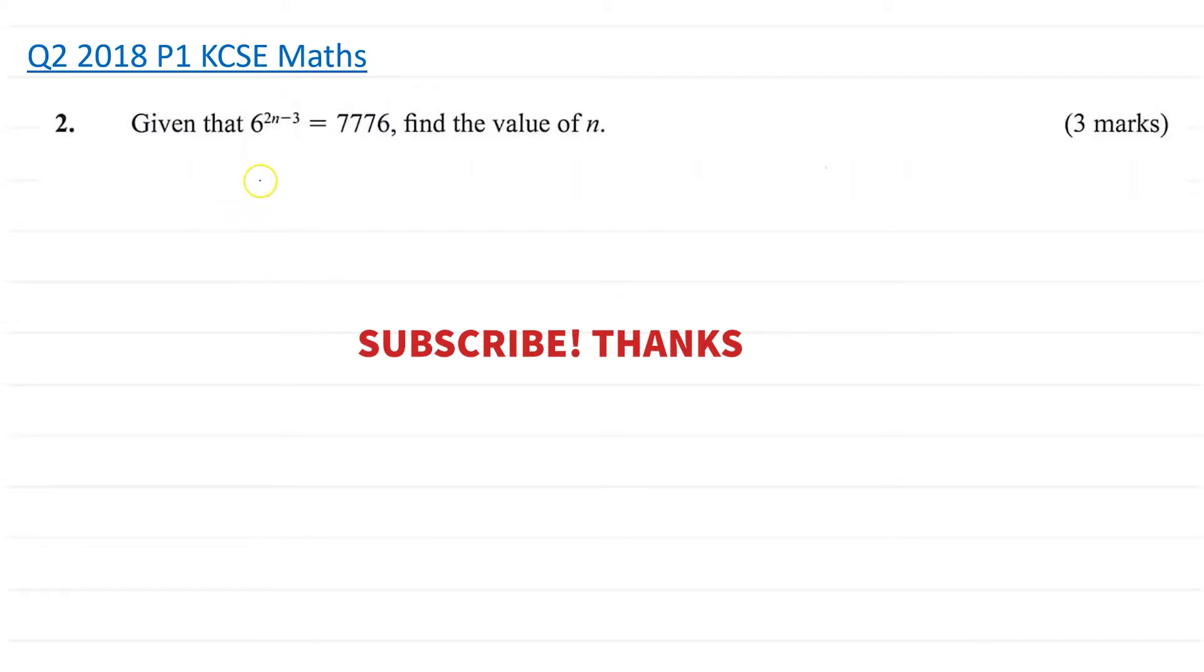We're doing question 2 of course, and we are given that 6 to the power 2n minus 3 is equal to 7776. And we're asked to find a value of n.